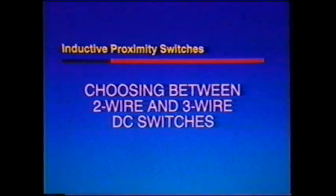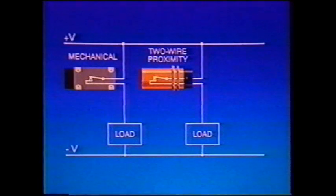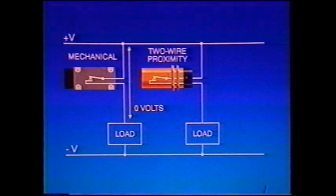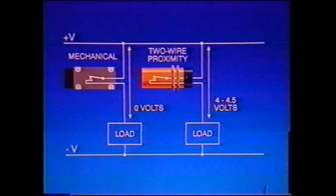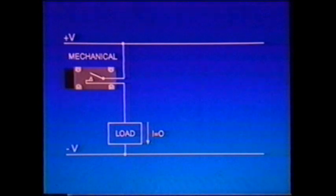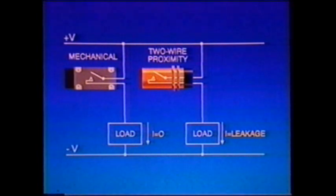There are two types of DC switches: two-wire DC switches and three-wire. AC and AC-DC switches are two-wire devices. With DC switches, you have a choice between two-wire and three-wire units. The familiar mechanical switch has two wires and is simply wired in series with the load, and a two-wire proximity switch is wired exactly the same way. When the mechanical switch is closed, it has essentially a zero voltage drop, but the proximity switch has a voltage drop in the order of four to four and a half volts. When a two-wire switch is open, there is a small current called leakage current flowing through the circuit.